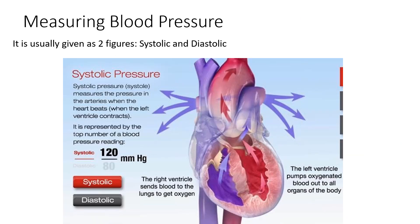Blood pressure is usually given as two readings: systolic and diastolic. Systolic pressure, otherwise known as systole, measures the pressure in the arteries when the heart beats and the left ventricle contracts. It is represented by the top number of a blood pressure reading, for example 120 mmHg. The right ventricle sends blood to the lungs to get oxygen, and the left ventricle pumps oxygenated blood out to all the organs of the body.